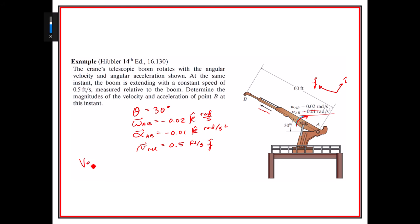So for a velocity analysis, we say that the velocity of B is going to be equal to the velocity of A plus omega AB crossed with R BA, B with respect to A, plus V rel. And I should have written that the R is equal to 60 J, and that's feet.